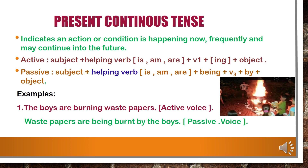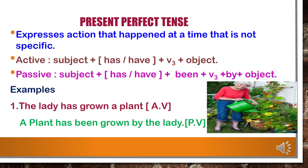Present continuous tense indicates an action or condition that is happening now, frequently, and may continue into the future. In active voice: subject plus helping verb (is/am/are) plus V1 plus ing plus object. In passive voice: subject plus helping verb (is/am/are) plus being plus V3 plus by plus object. Example — in active voice: 'The boys are burning waste papers.' In passive voice: 'Waste papers are being burned by the boys.'